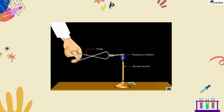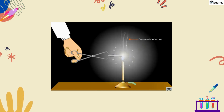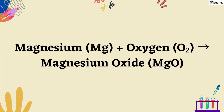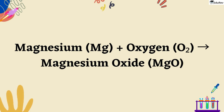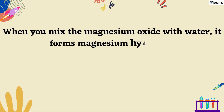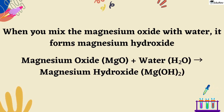Have you ever burned a piece of magnesium? When you heat up magnesium, it reacts with oxygen in the air to form a bright white light and magnesium oxide. This is a chemical change, and it can be represented by the following equation: magnesium (Mg) + oxygen (O2) gives magnesium oxide (MgO). But that's not all. When you mix the magnesium oxide with water, it forms a completely new substance called magnesium hydroxide. Magnesium oxide (MgO) + water (H2O) gives magnesium hydroxide (Mg(OH)2).